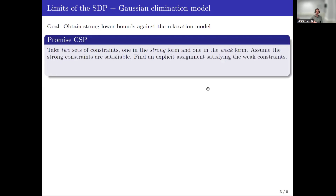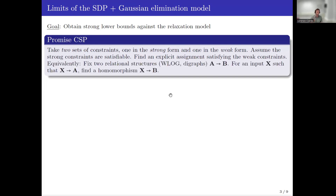These lower bounds involve a generalized version of CSPs known as promised CSPs. Here, I take two sets of constraints, one in a strong form and the other in a weak form. I am promised that the strong constraints are satisfiable, and the goal is to find an explicit assignment that satisfies the weak ones. In homomorphism form: I have two relational structures A and B, where A encodes the strong constraints and B encodes the weak constraints, meaning A homomorphically maps to B. Without loss of generality, we can assume both A and B are digraphs. Given an input X promised to be homomorphic to A, find an explicit homomorphism from X to B, which exists since homomorphisms compose.